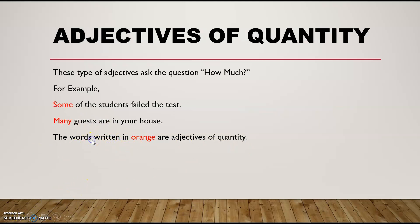Lastly, we are going to learn about adjectives of quantity. These types of adjectives ask the question: how much? For example, 'Some of the students will be tested.' How much? Some. The second example: 'Many guests are in your house.' How many guests are in your house? Many. The words written in orange are adjectives of quantity.